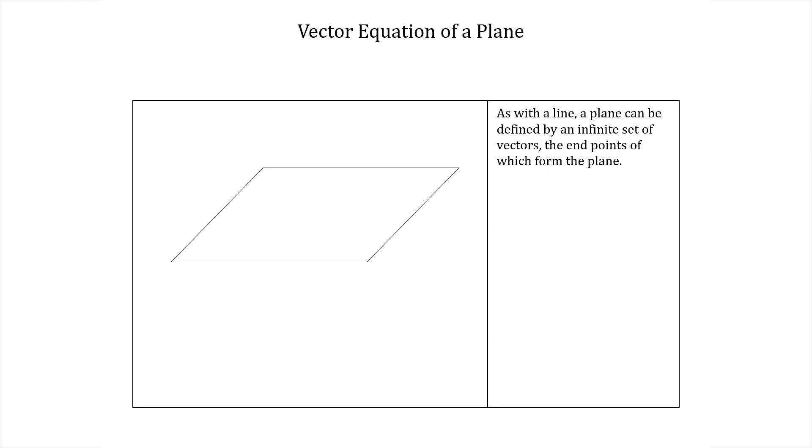So let's take a plane and say the origin of our coordinate system is here. Then how can we describe this plane mathematically using vectors?